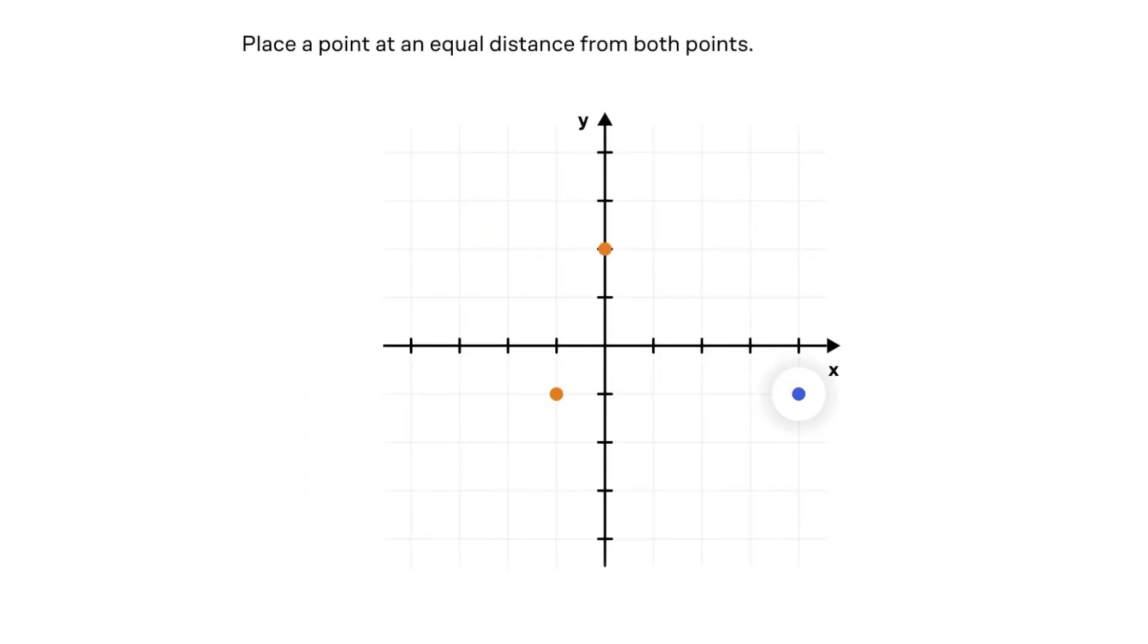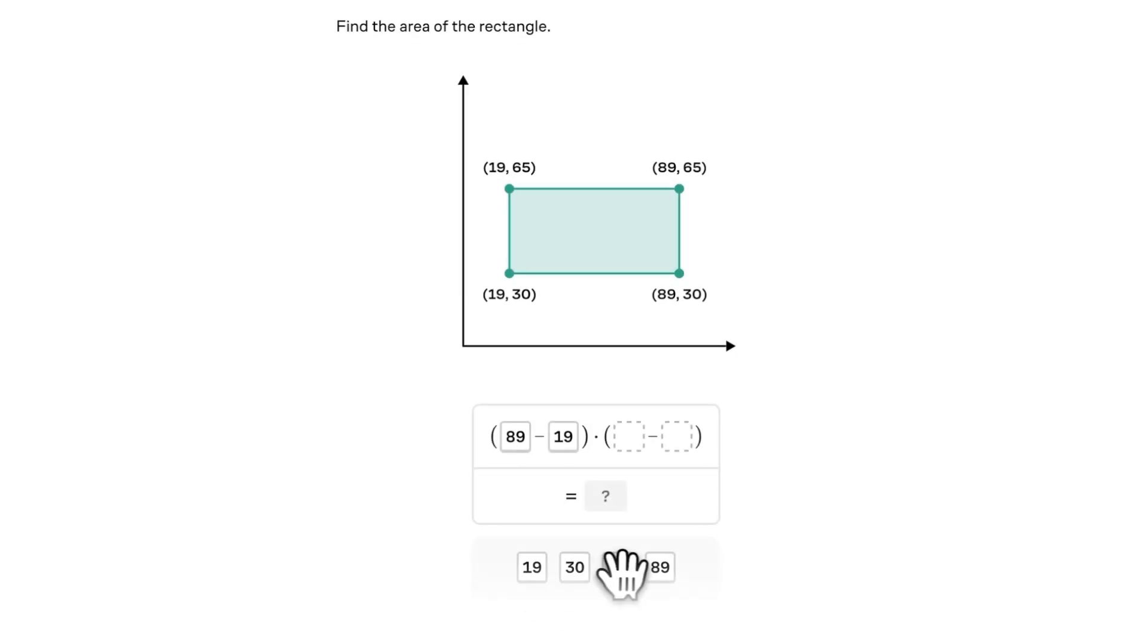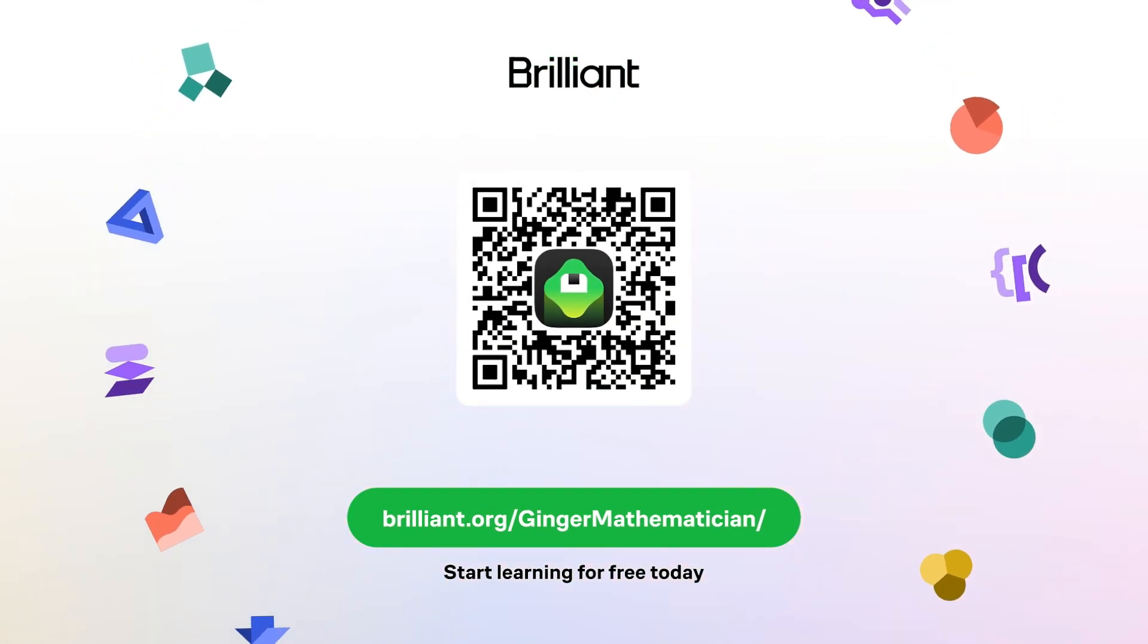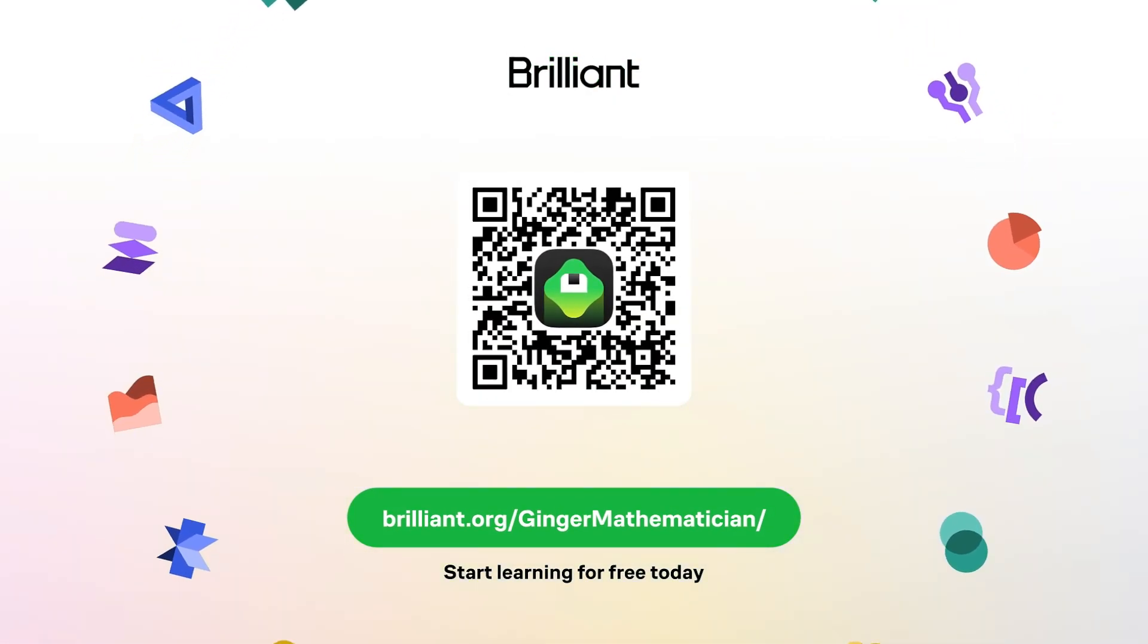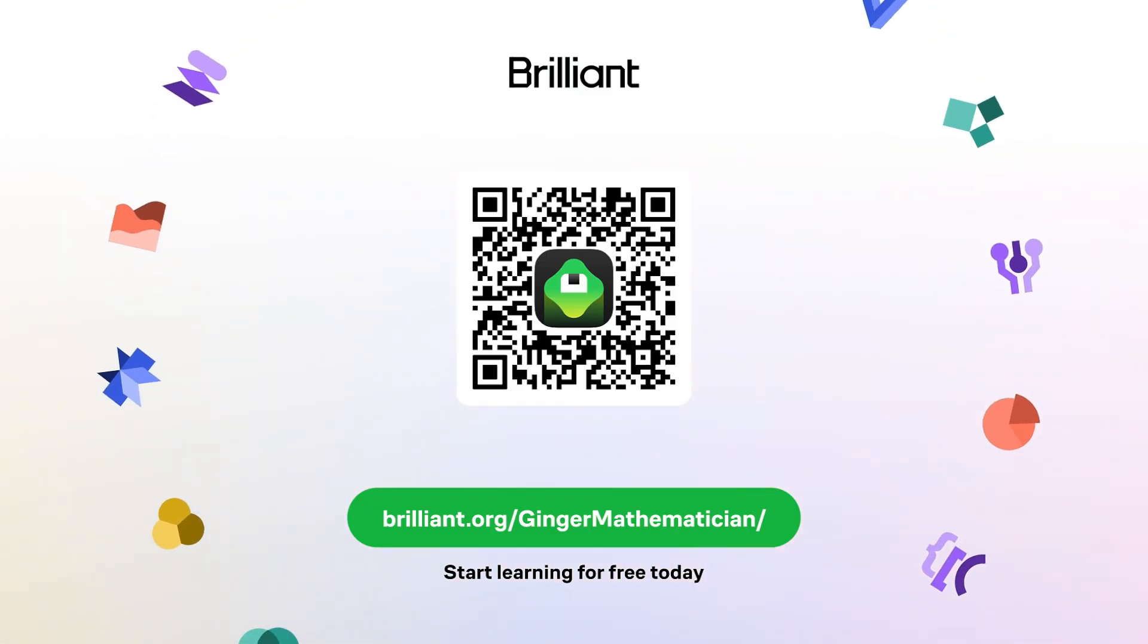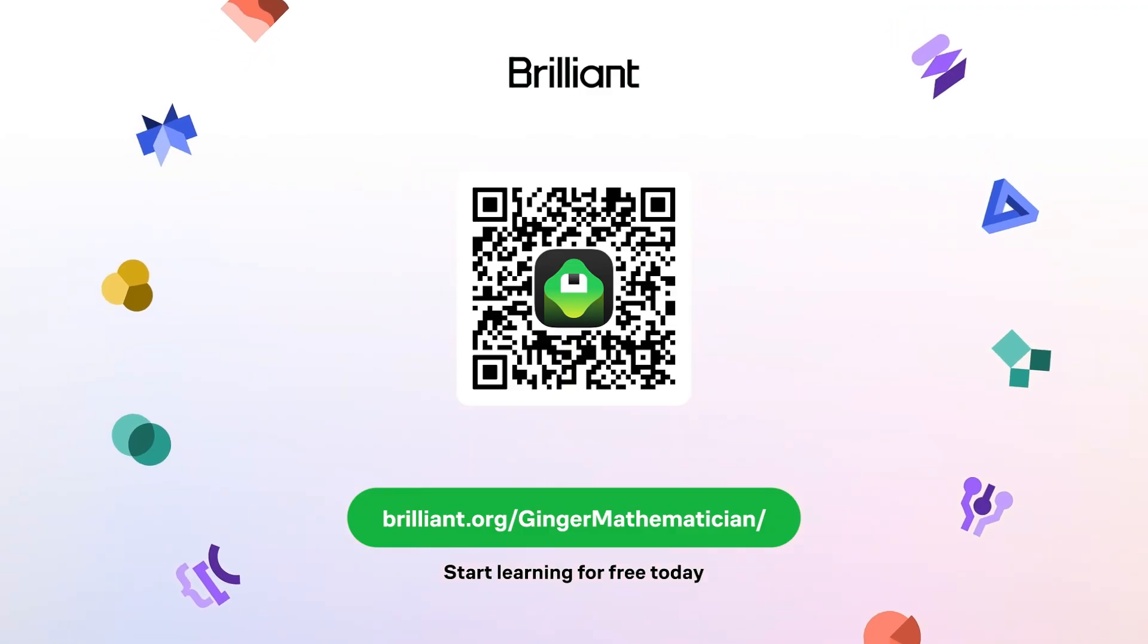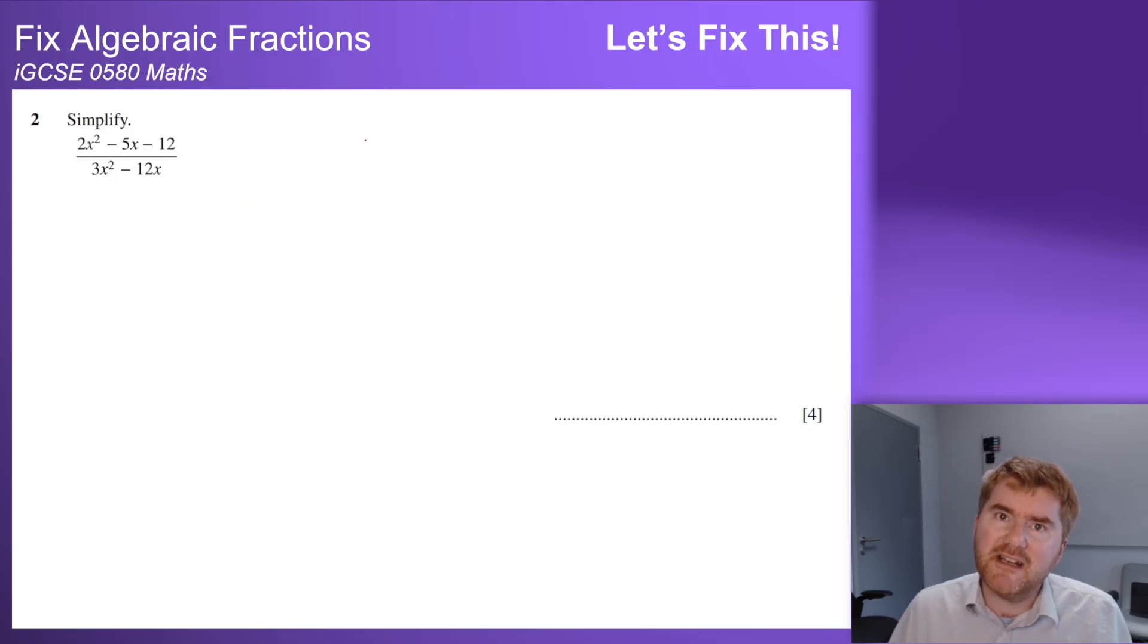It's also super engaging with competitions and daily encouragement to keep you on track. You'll be building your intuition for things like solving equations, so when a tricky problem does come, you're more than ready for it. So to start your journey to be a brilliant mathematician, then please go to brilliant.org/gingermathematician and you will get 20% off Brilliant's annual premium subscription for unlimited daily access. That's brilliant.org/gingermathematician. The link is also in the description below.